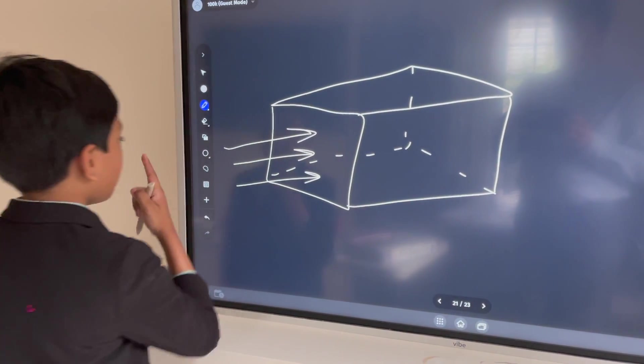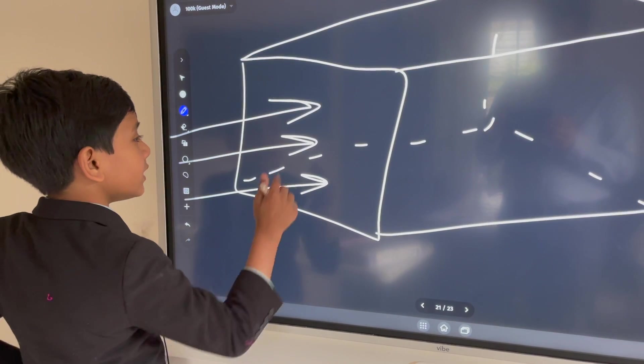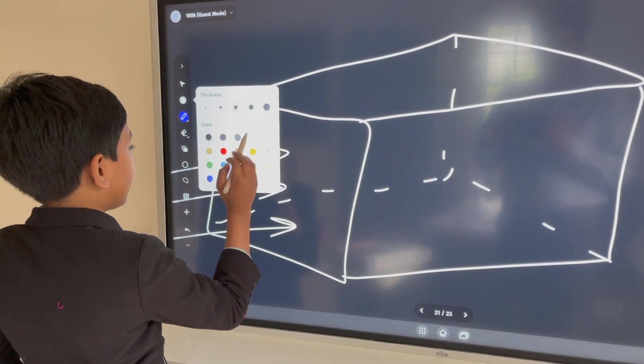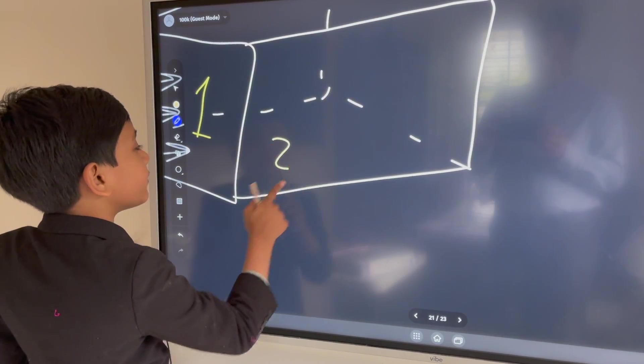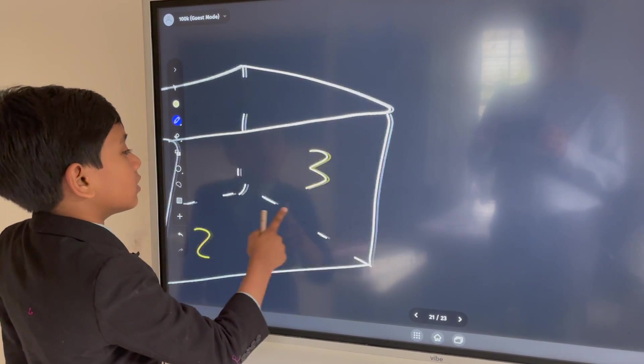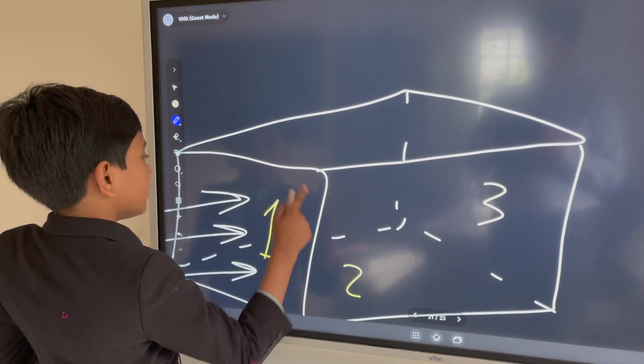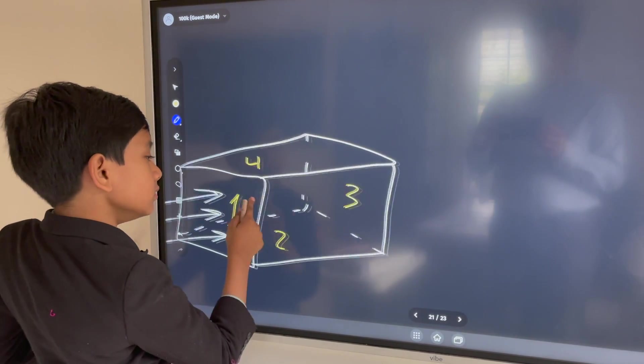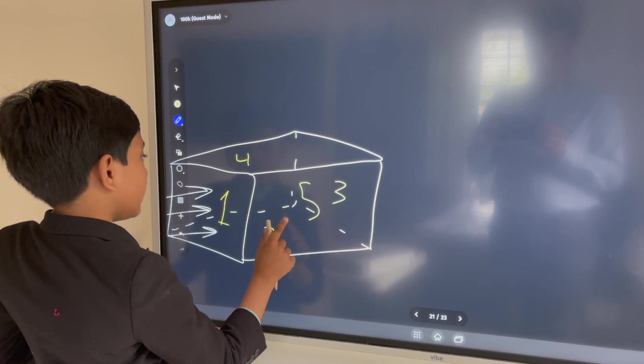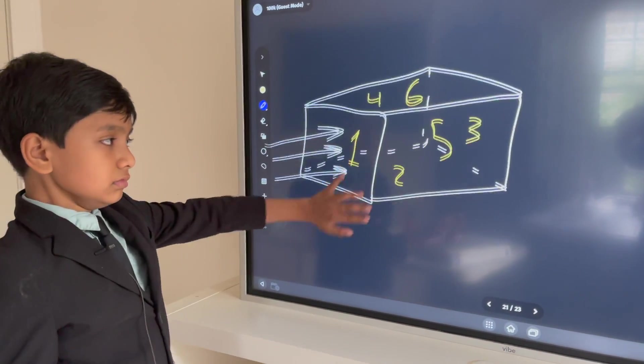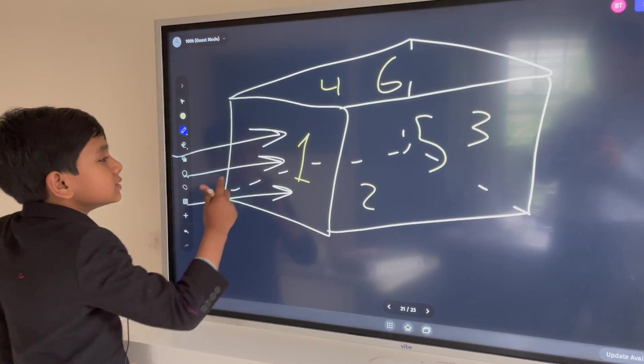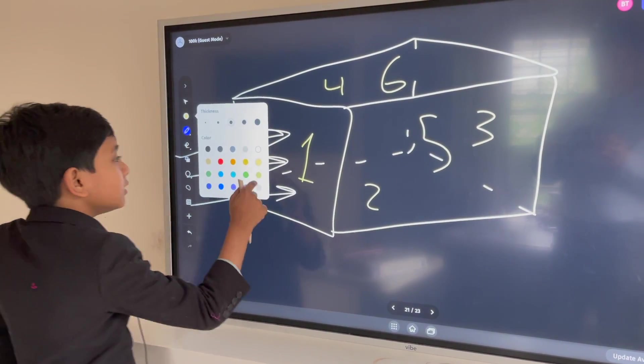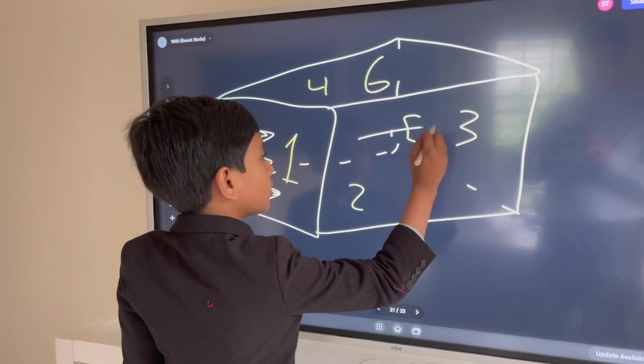Alright, so the magnetic field enters in through, let's say, face number one. Now this bottom face is number two. This side one is number three. This one is number four. This front one is number five. And this top one is number six. Alright.